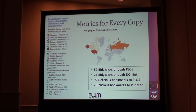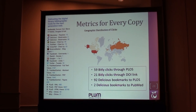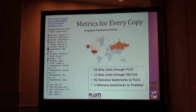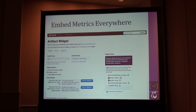Here's an example where the same article has been hit with bitly — a link shortener — so we can count how many times people have clicked on that bitly link. One goes to the PLOS version and one goes to the DOI, which resolves to the PLOS version, but we need to know those are two different clicks associated with that. And the delicious bookmarks — 92 for the PLOS version and two more from PubMed. From the author or somebody supporting the author, you want to be able to get all these.